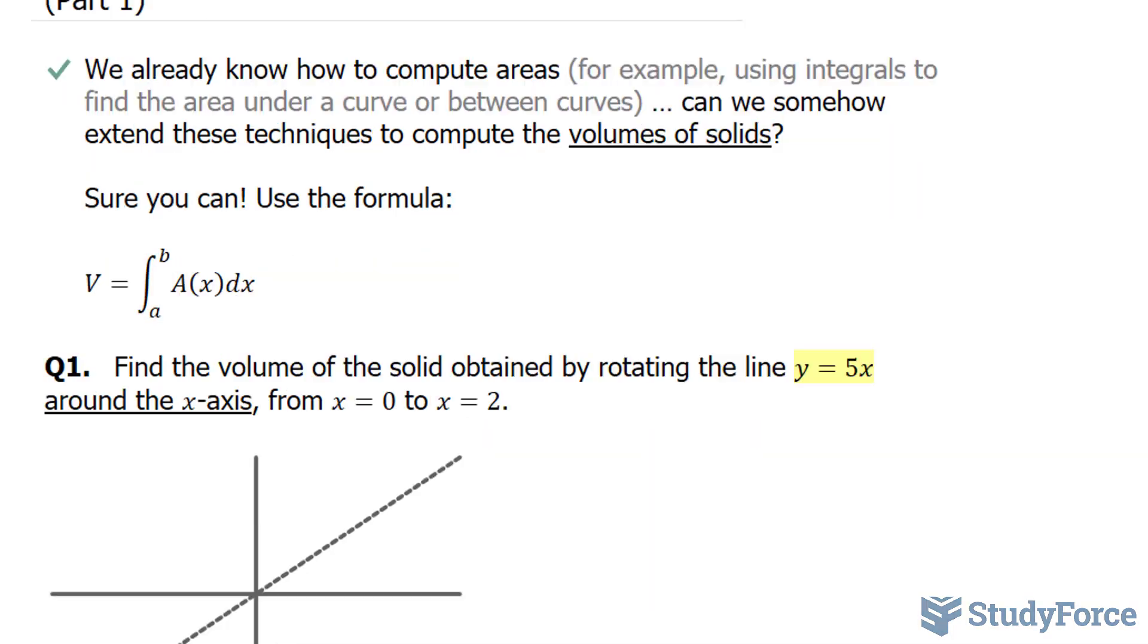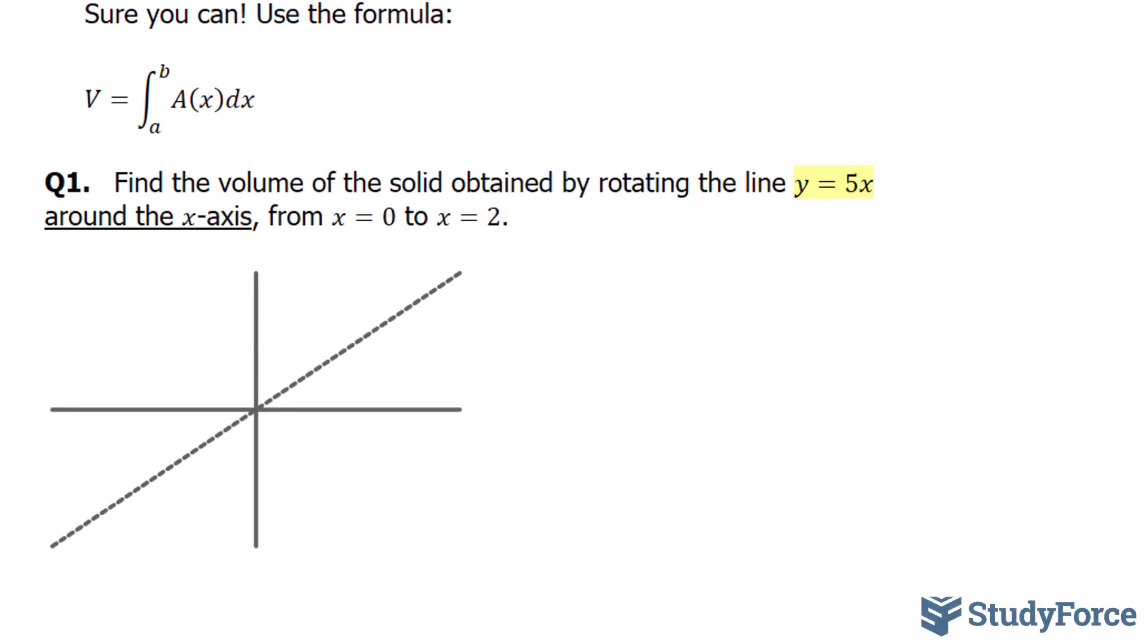Let's start with question one. In question one, we're asked, find the volume of the solid obtained by rotating the line y is equal to 5x around the x-axis from x is equal to 0 to x is equal to 2.